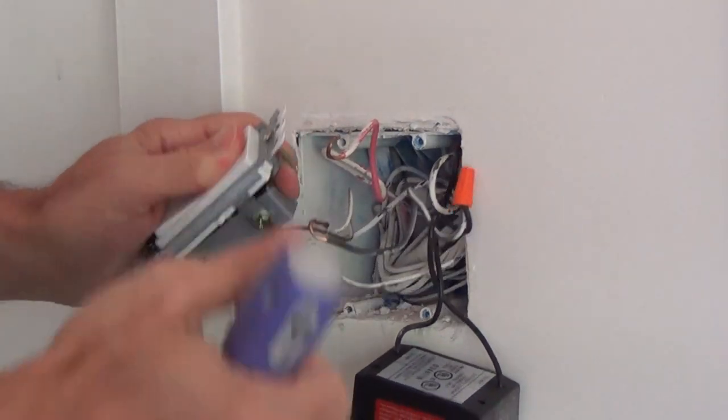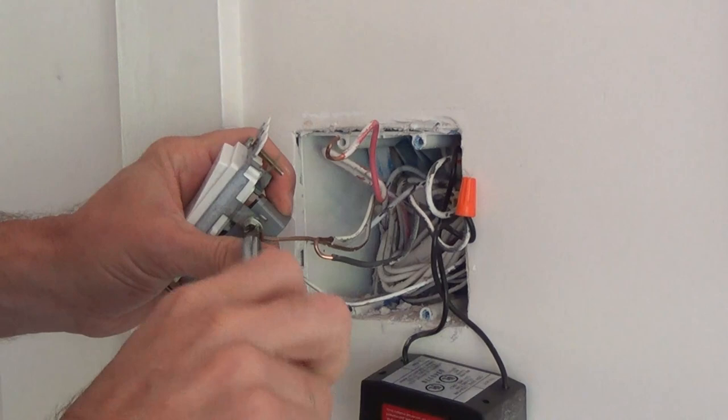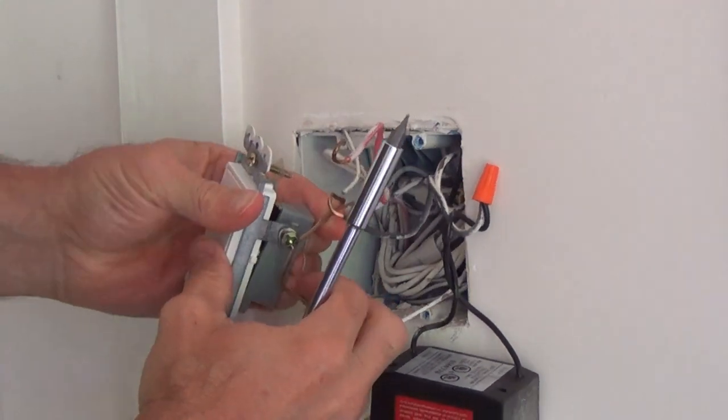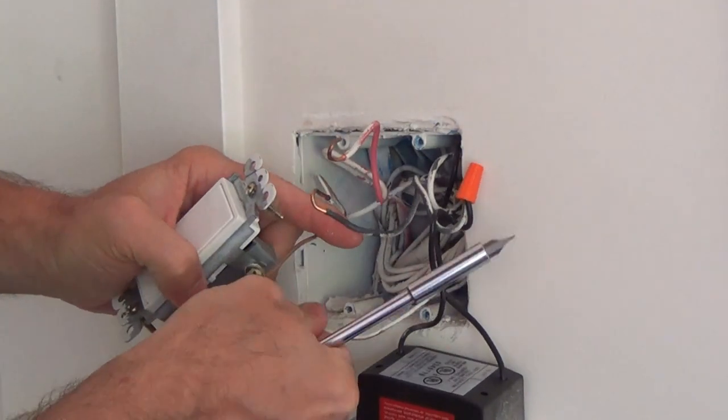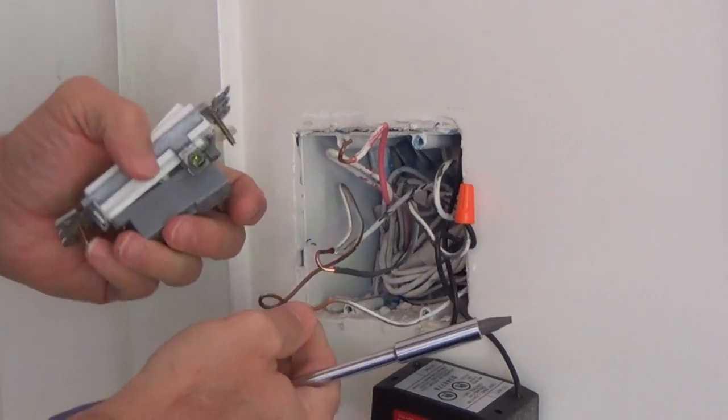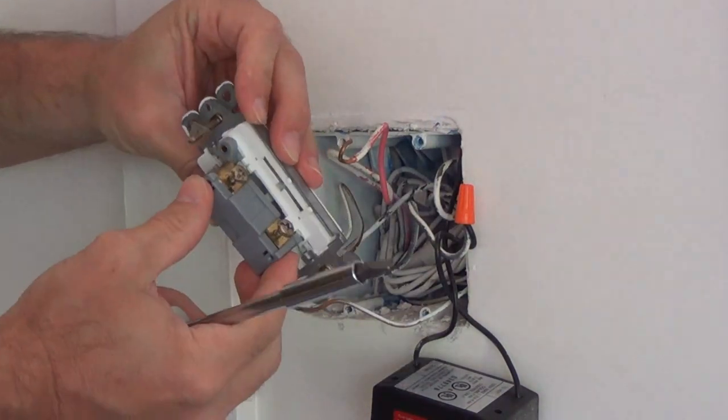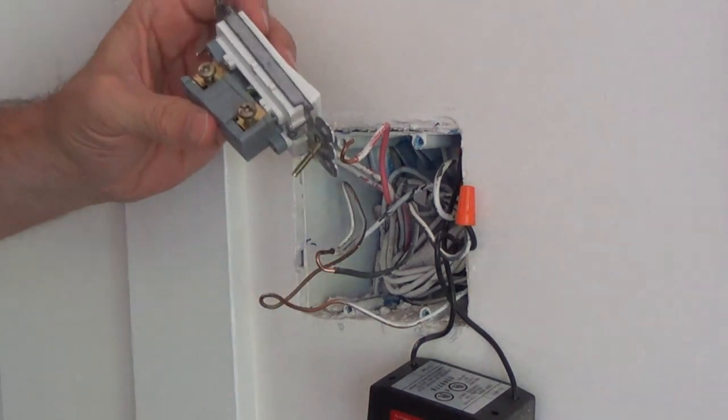And then turn this around and remove the grounding wire. Open it up. And you can see the problem here. It's actually a broken case, and that's what was causing the short. I'm going to replace it with a brand new one.